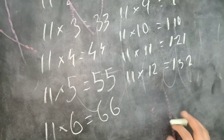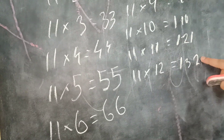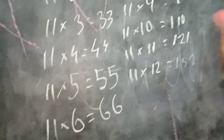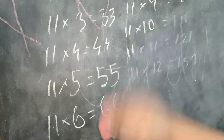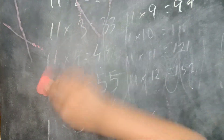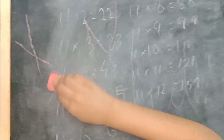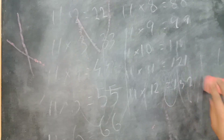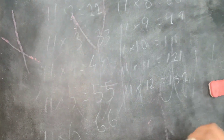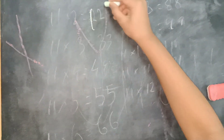So it looks pretty easy, but after 10 it might get hard, so I'm going to teach you a cool math trick so it's going to be easy and quick. If you know addition, it's going to be pretty easy. For example, I'm going to do 11 times 48.